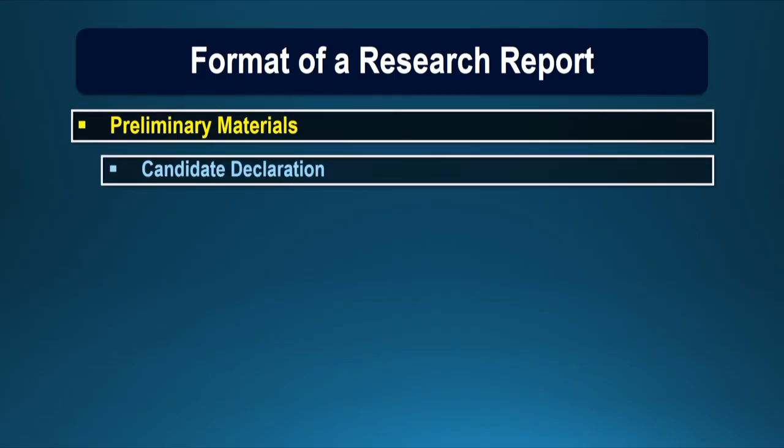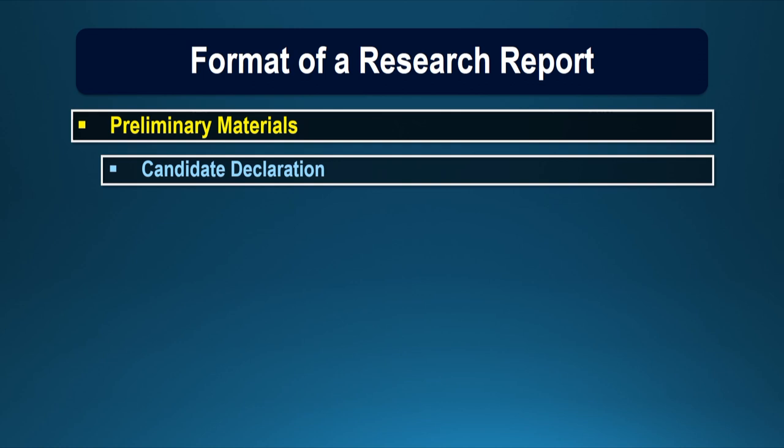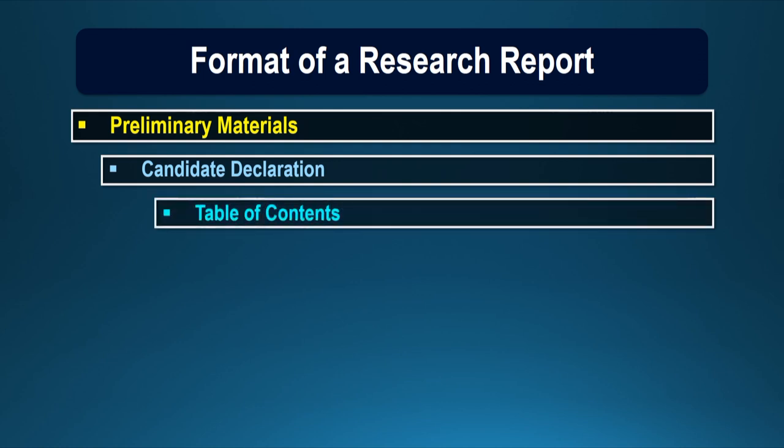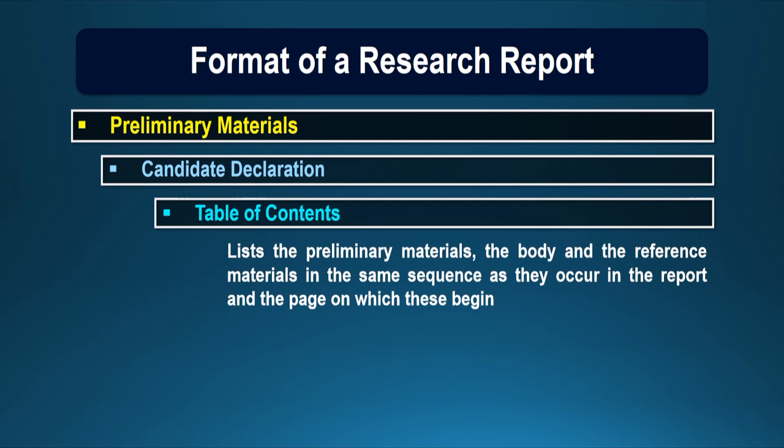Another page contains the candidate declaration that this research is carried out by himself or herself, and it does not contain any material which is taken directly from some other source. It is followed by the table of contents, which lists the preliminary material, the body, and the reference material in the same sequence as they occur in the report, and the page on which these begin. This page helps readers who want to study a particular section quickly find the page number on which that section appears.